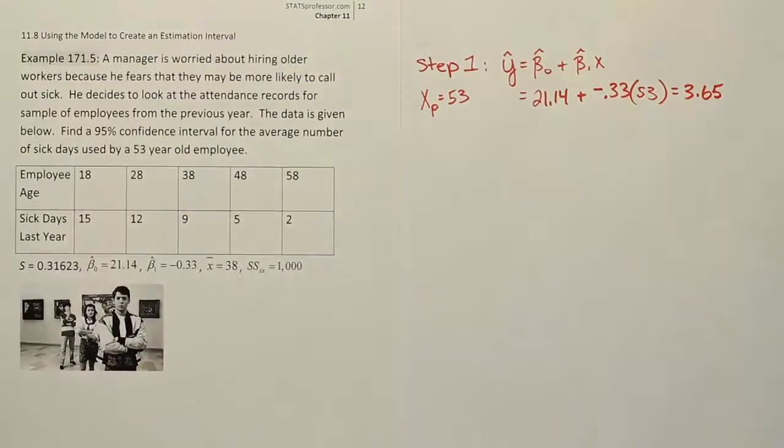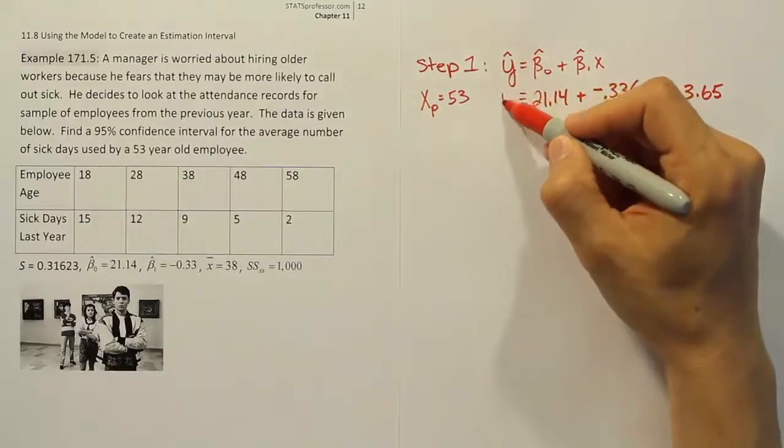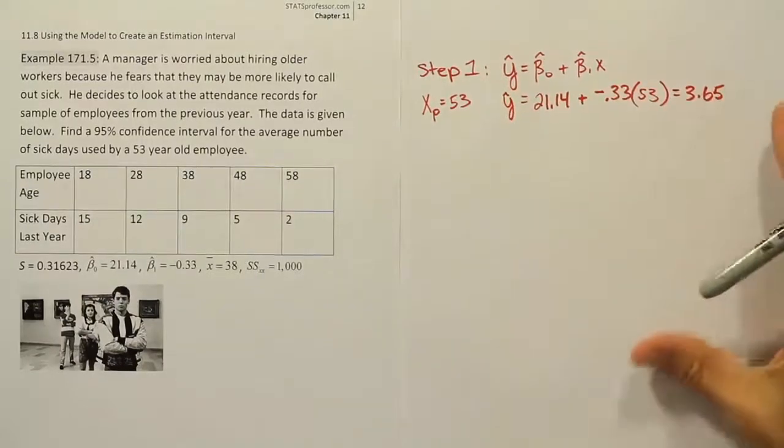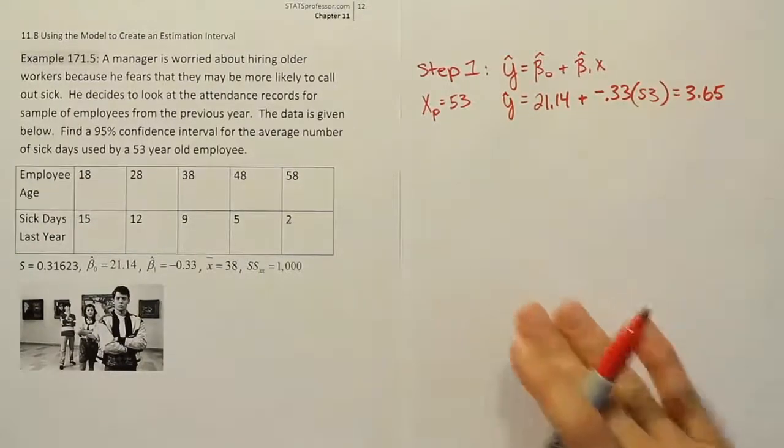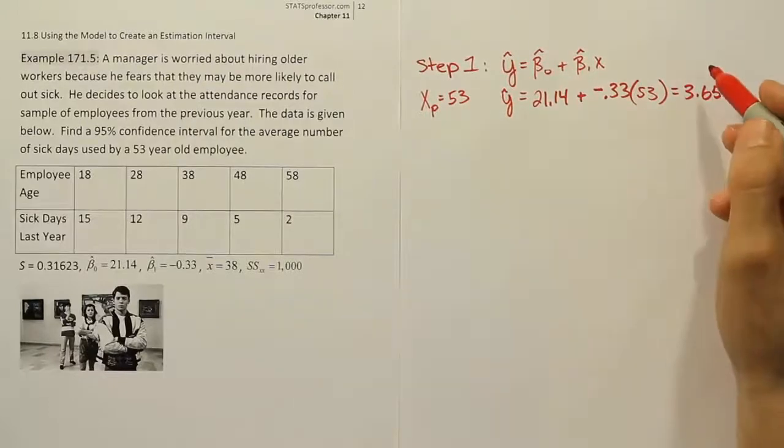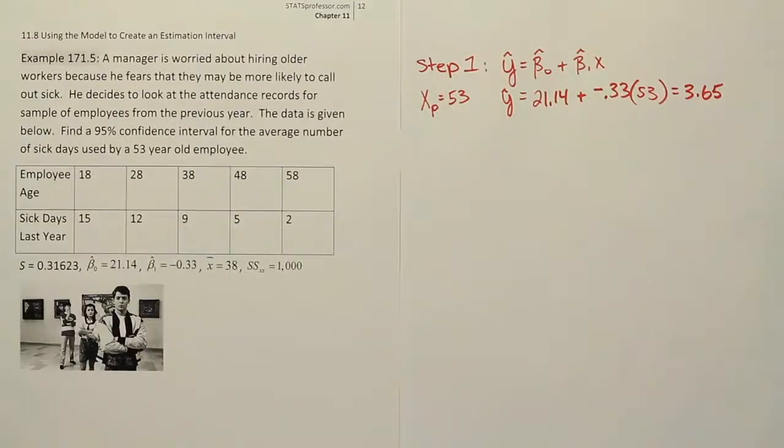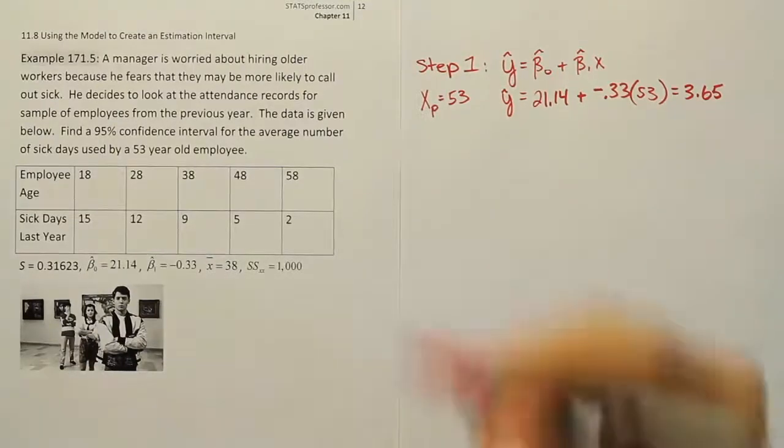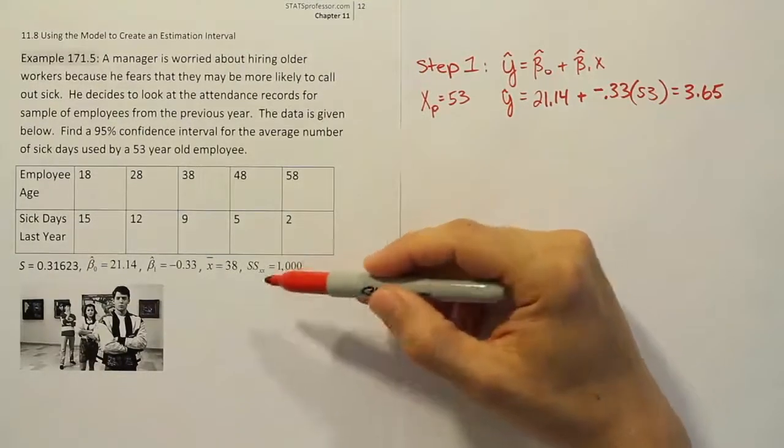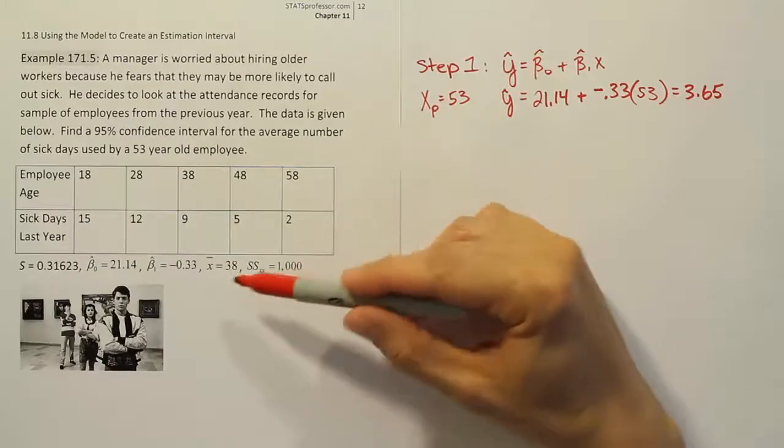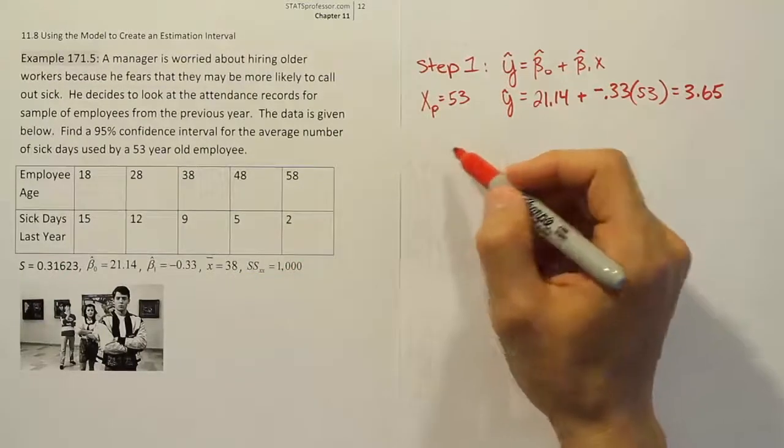So 3.65 is the value we come up with in step 1. That's part of our data step for our confidence interval to figure out what the predicted y value is. Remember what this predicted y value is - it's essentially our prediction of how many sick days this individual would take based on their age alone. Based on the fact that they are 53 years old, we'd say we predict them to have almost four absentees across the year.